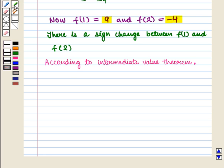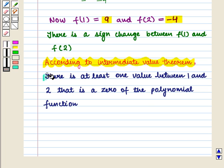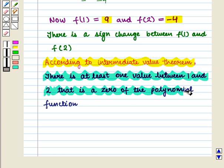Then according to the intermediate value theorem, there is at least one value between 1 and 2 that is a zero of the polynomial function.